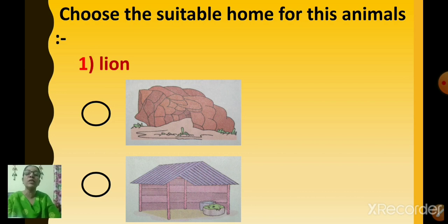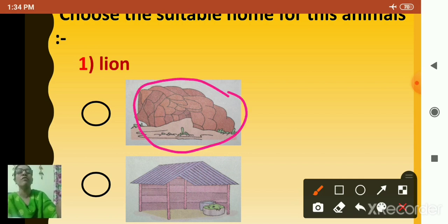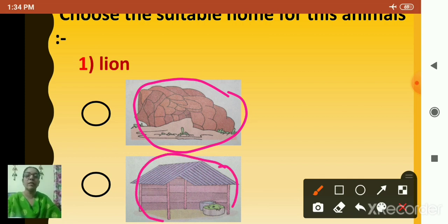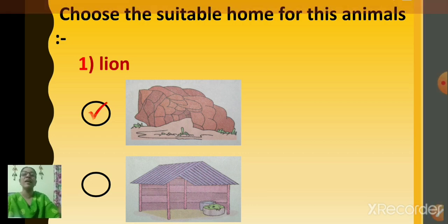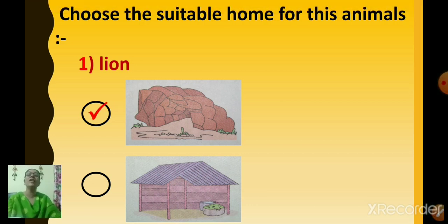First, we will see which animal's home we are going to find. That is the lion. We have to find the home of the lion. The first picture is a den, and the other one is a shed. Does the lion live in a den or a shed? Yes, the lion lives in the den. Click on den. The home of the lion is den.